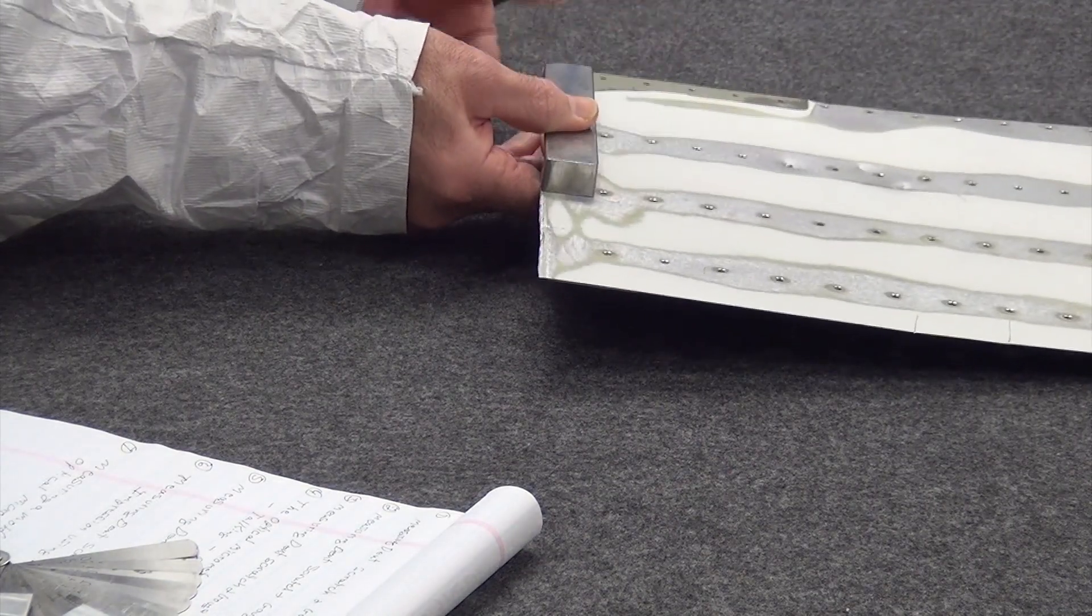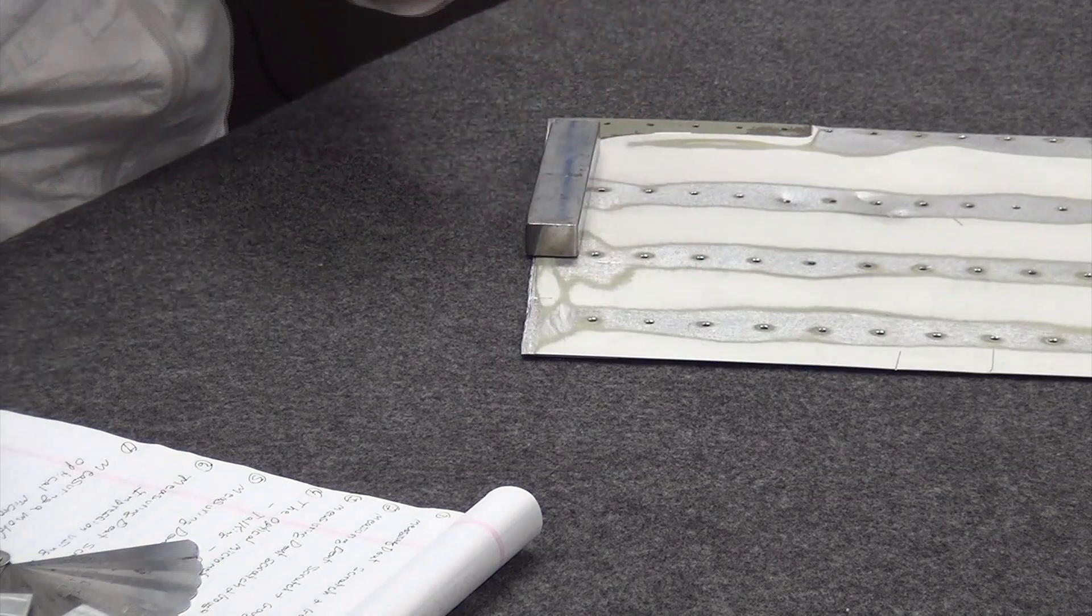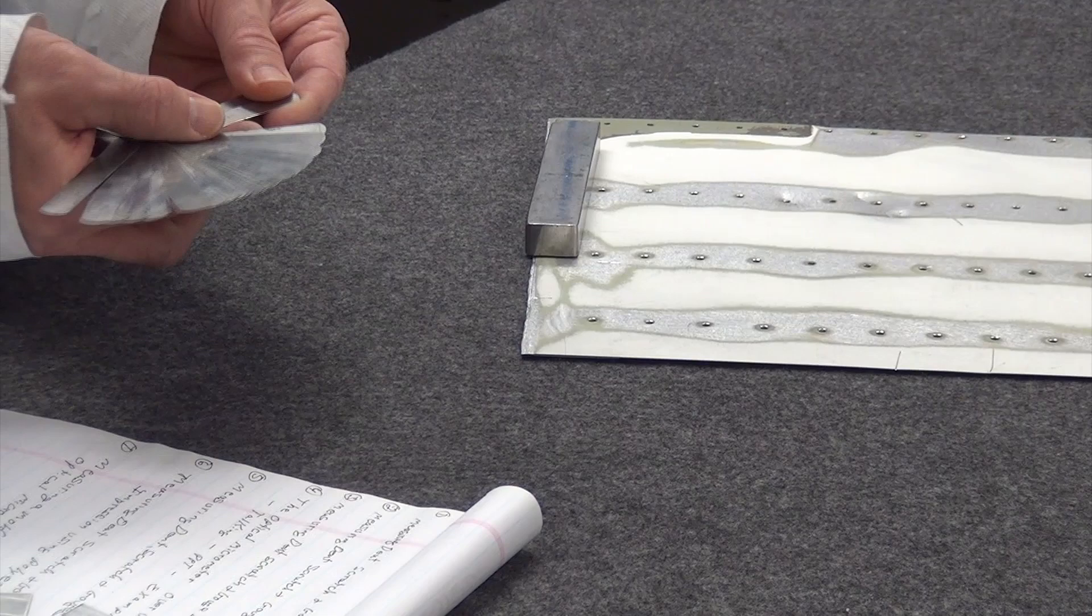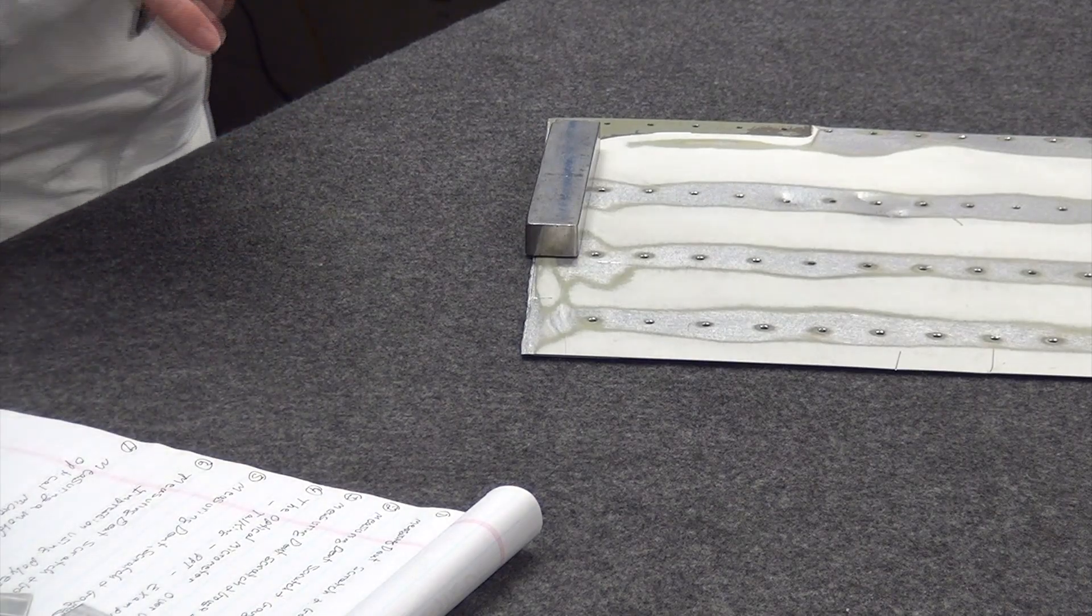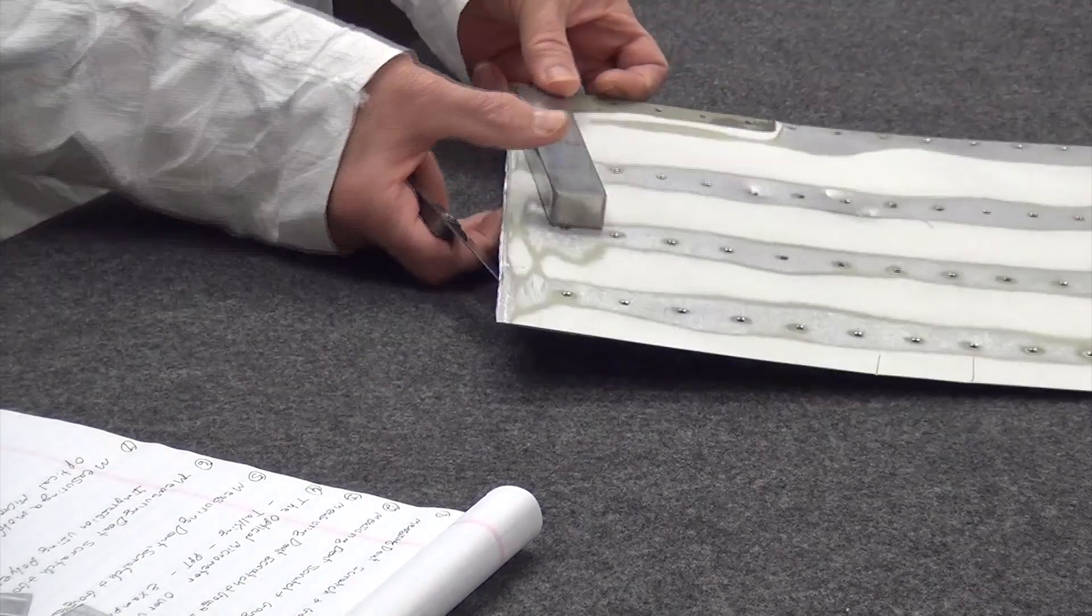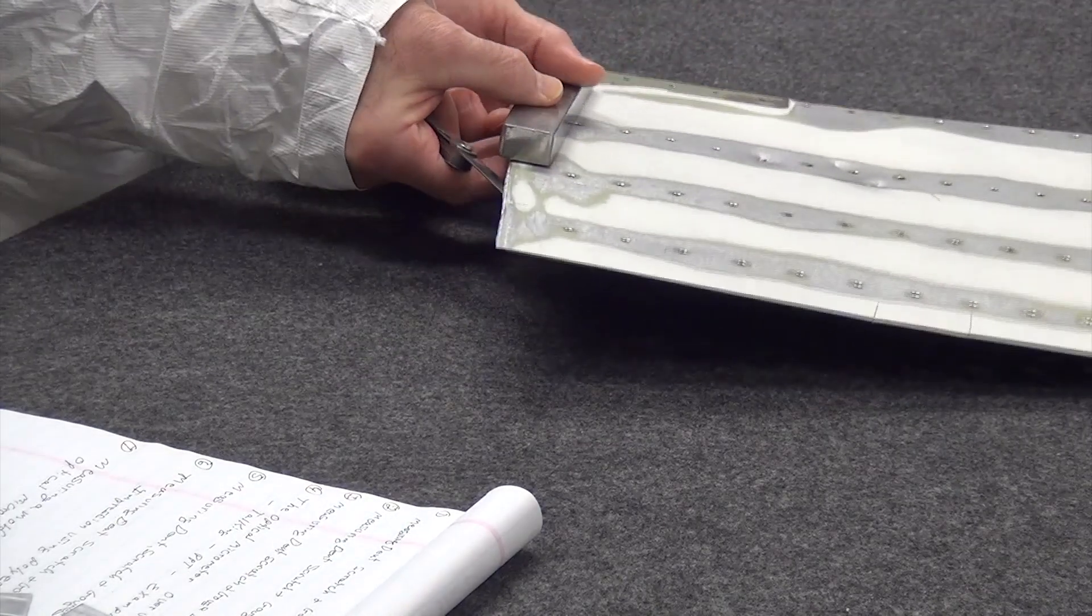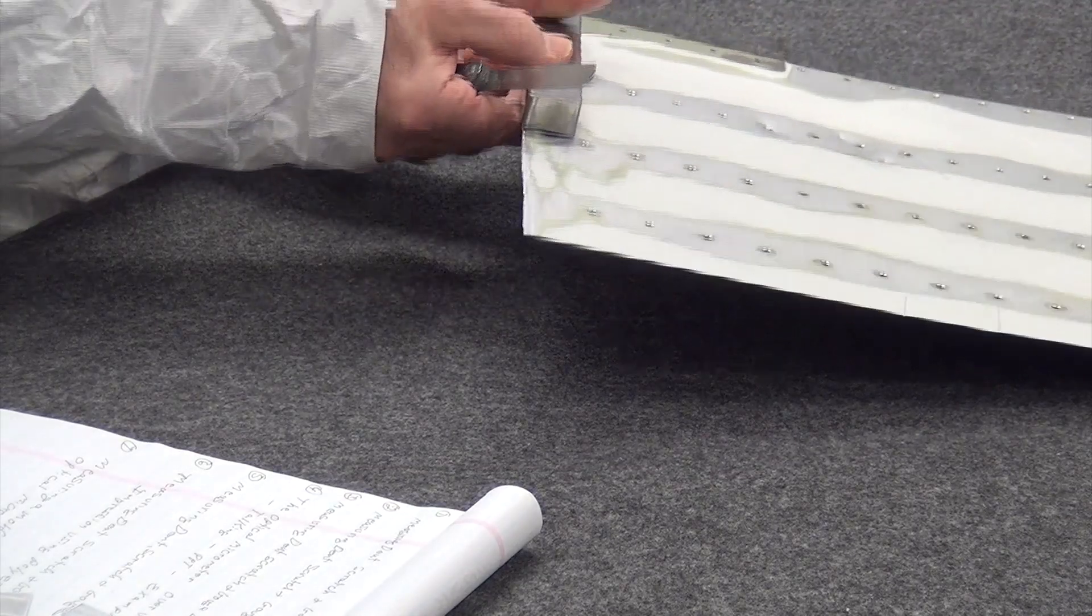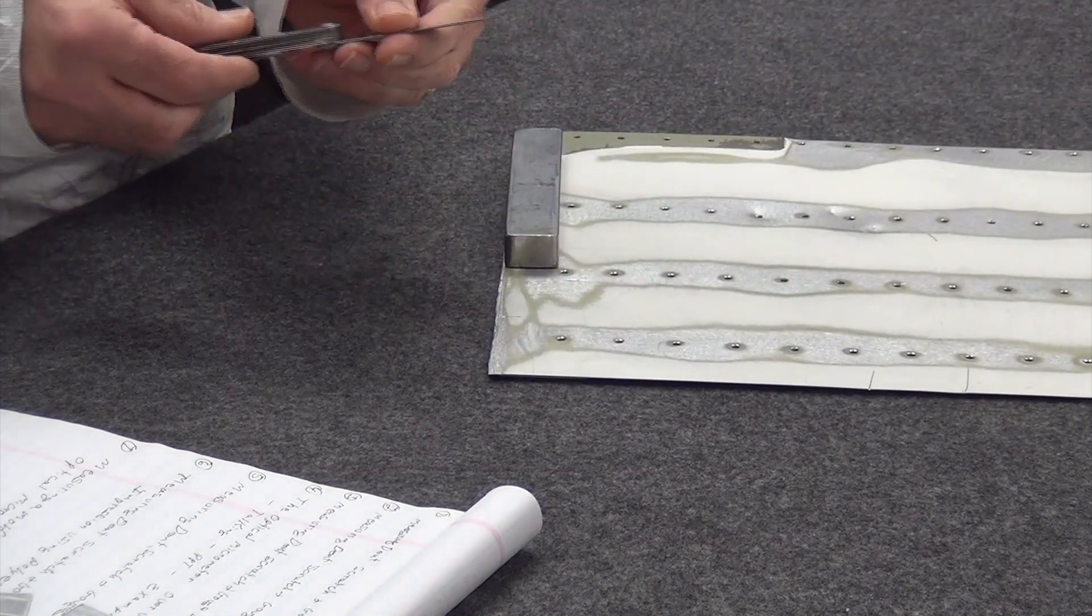And so I set this down, get some feeler gauges set up here, and feeler gauges are just a trial and error method in which I have to maintain my straight edge. Here I've got fifty thousandths in here, it's too thin.